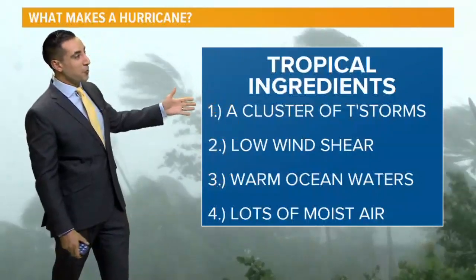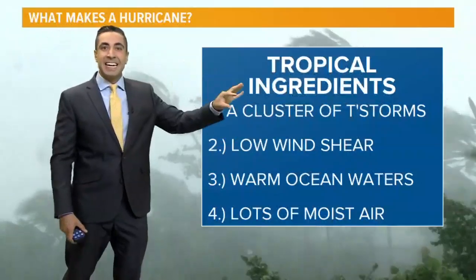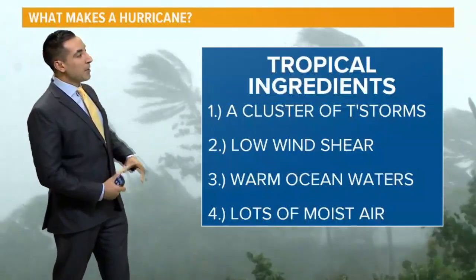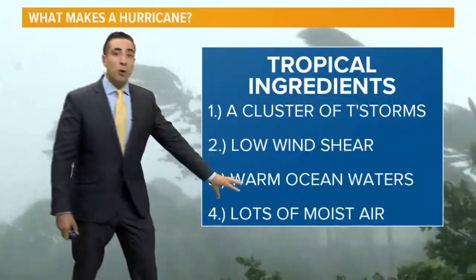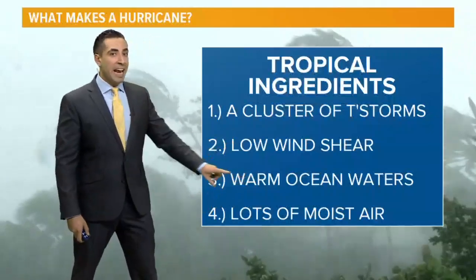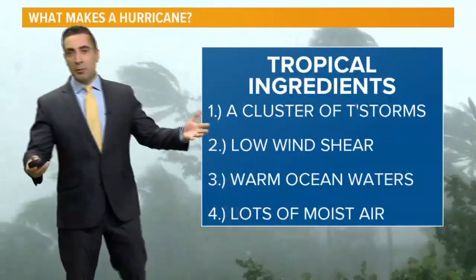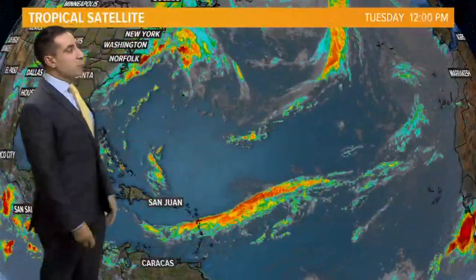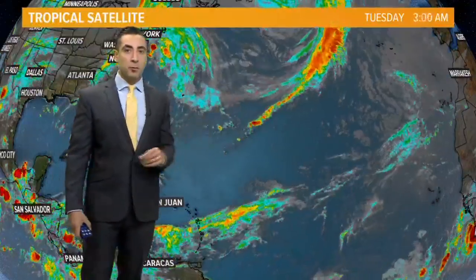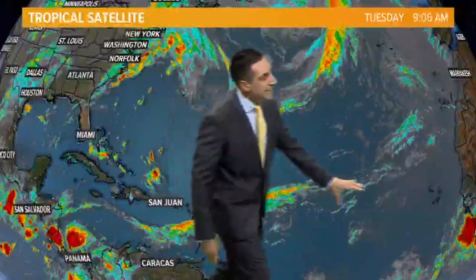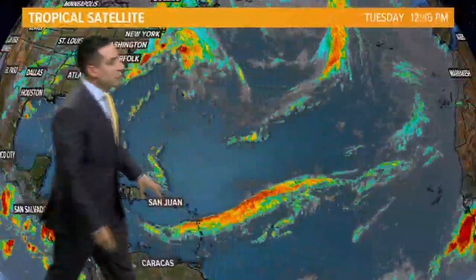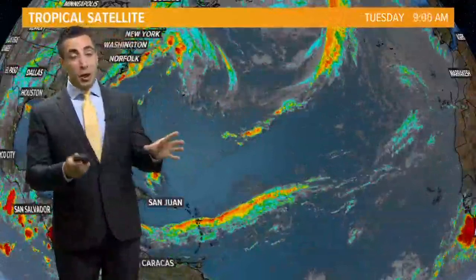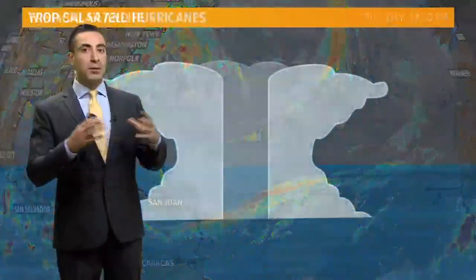A cluster of thunderstorms to start things off. We need a seed — that seed will grow eventually into a tropical storm or a hurricane. Low wind shear, warm ocean waters, and lots of moist air. You need that moist, humid air. Out there in the Atlantic is where we find that cluster of thunderstorms to develop. We have the tropical Atlantic, the Caribbean, and then the Gulf of Mexico — that's typically where we look for these to start occurring and growing.